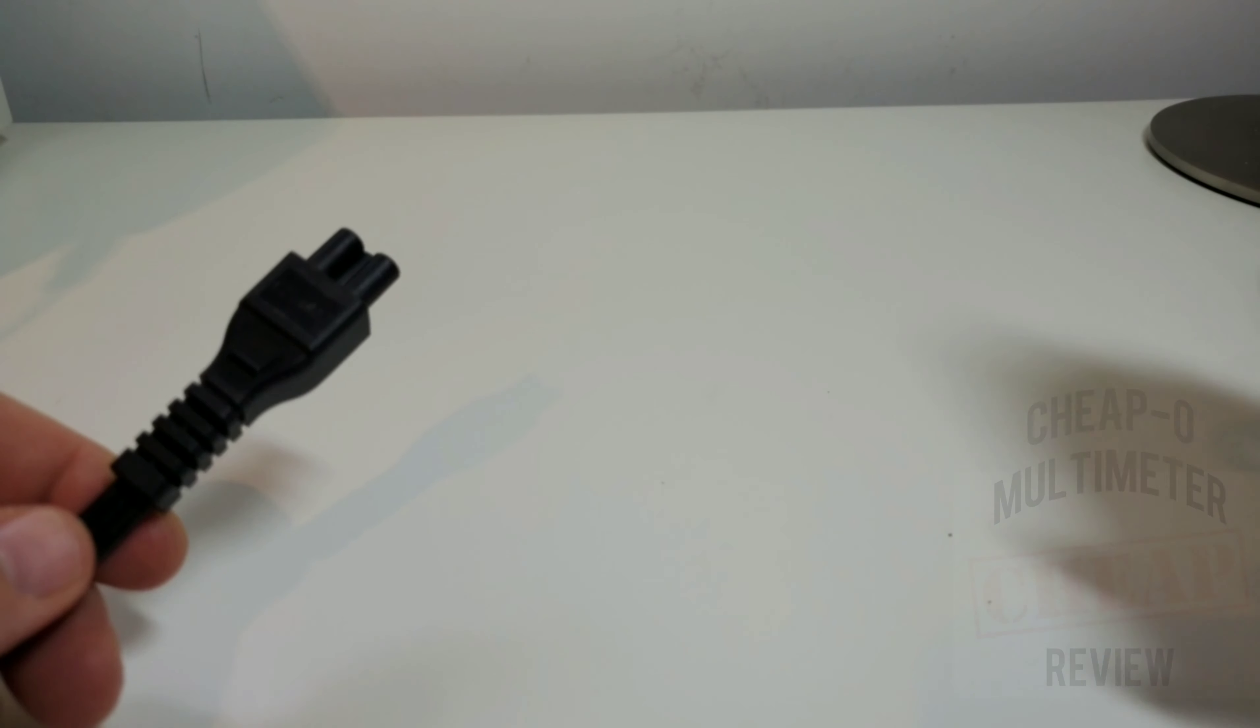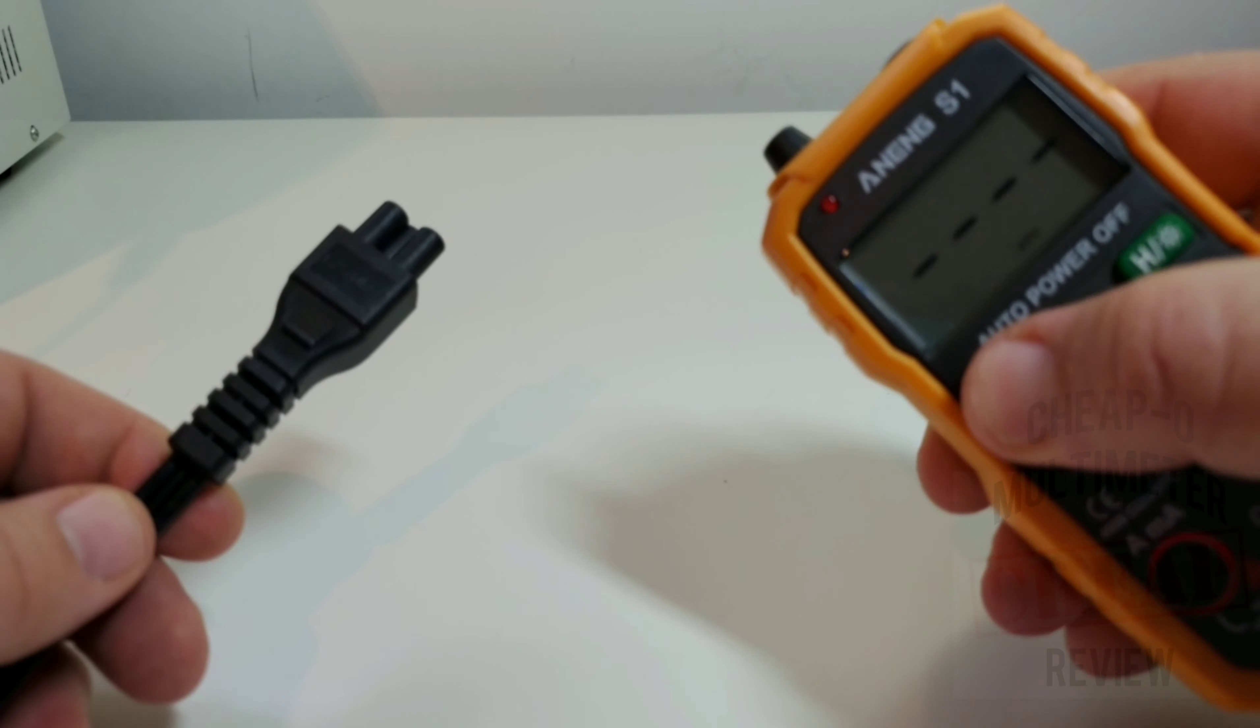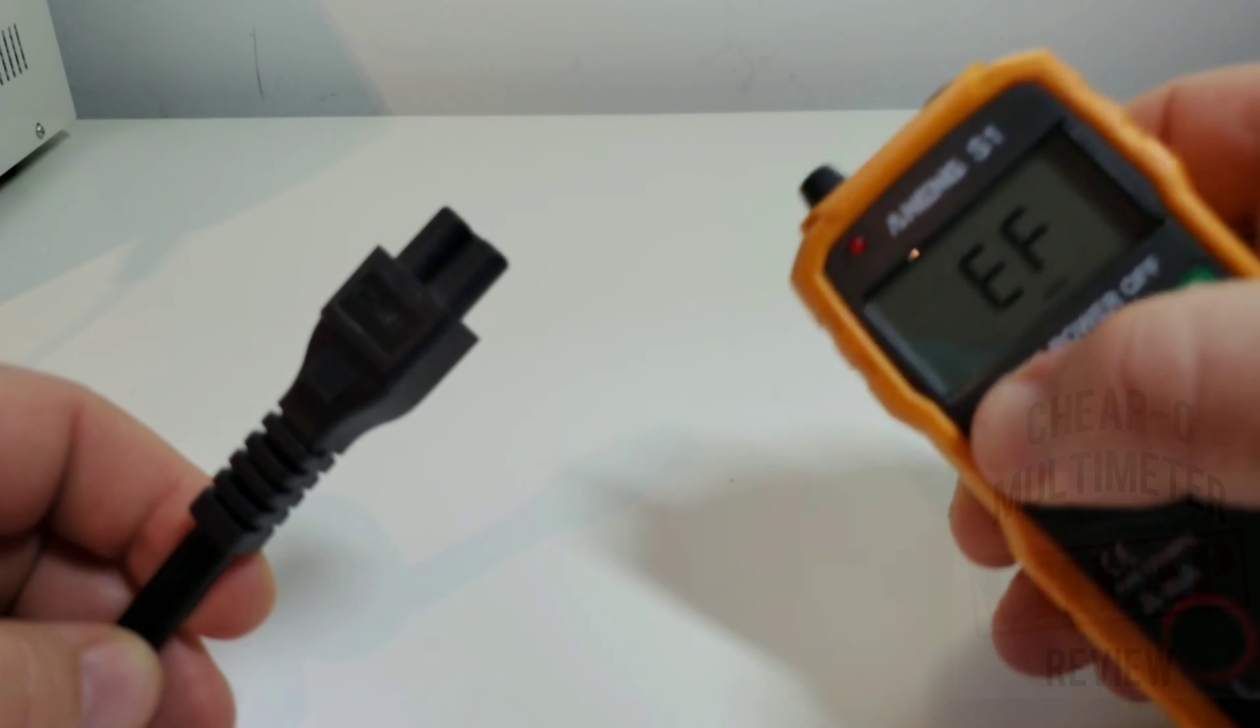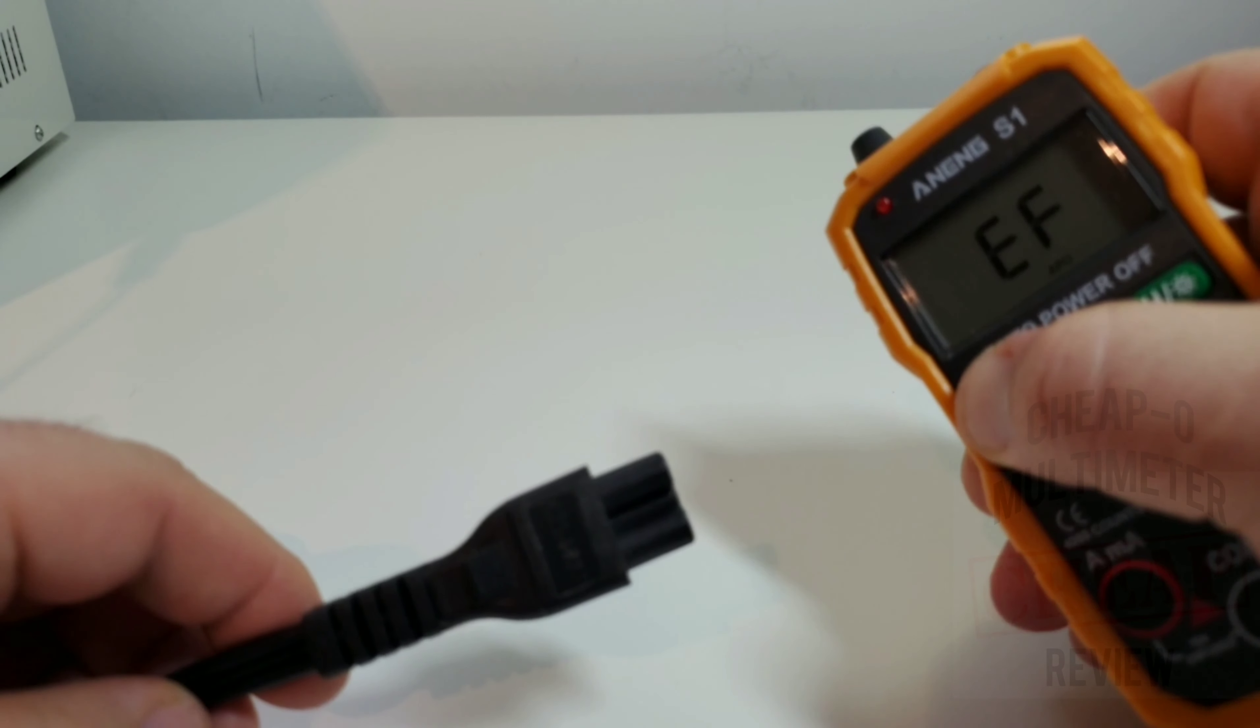All right, NCV, non-contact voltage mode is next. Here we go, we gotta hold down on that NCV button. Do not let go, do not pass go, do not collect $200, what the heck am I trying to say? I don't know. All right, so we've got to keep your finger depressed on the NCV. It brings us into EF, okay, here we go.